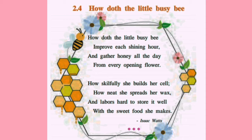How skillfully she builds her cell, how neatly she spreads her wax. You can see in the diagram that honeycomb cells are hexagons — shapes with six sides. How neatly and skillfully the bee arranges these cells! Every cell has six sides, six lines. That is how organized the bee is in building her honeycomb.